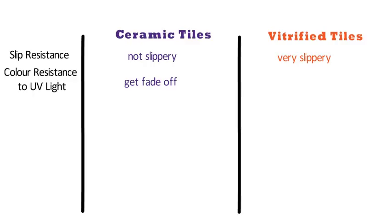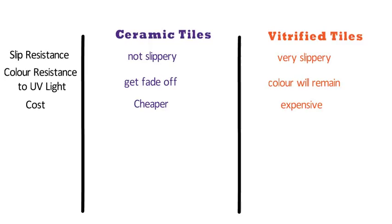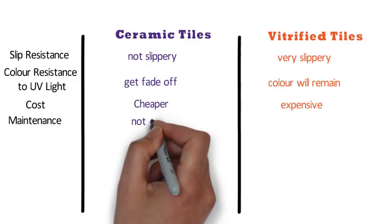Number thirteen is cost. Ceramic tiles are cheaper compared to vitrified tiles, whereas vitrified tiles are expensive when compared to ceramic tiles. Number fourteen is maintenance. The maintenance of ceramic tiles is not easy as compared to vitrified tiles. The maintenance of vitrified tiles is easy because of its shiny surface, making it easy to clean.